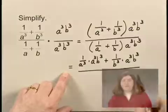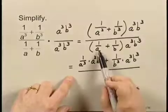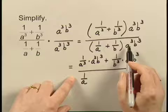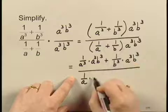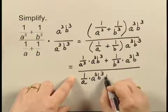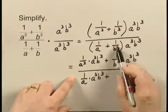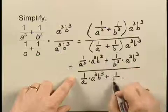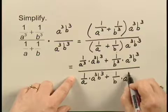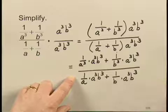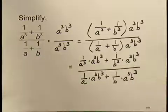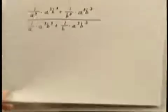All that is over 1 over a times a-cubed b-cubed, plus 1 over b times a-cubed b-cubed. Now I can perform those individual multiplications.